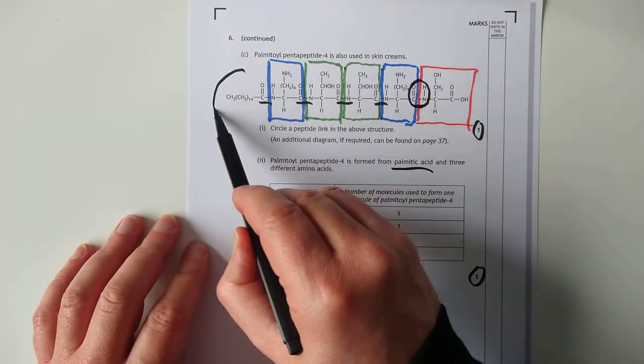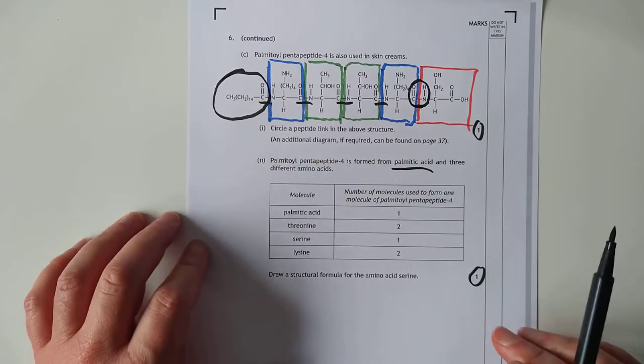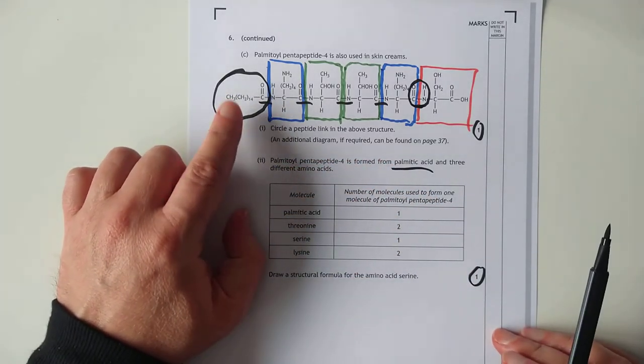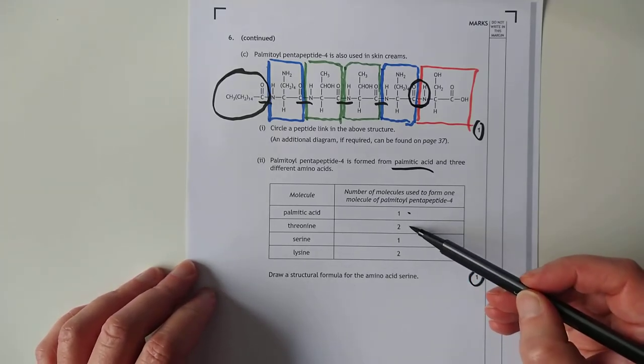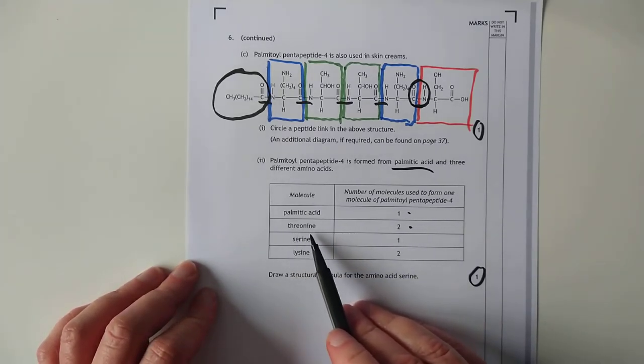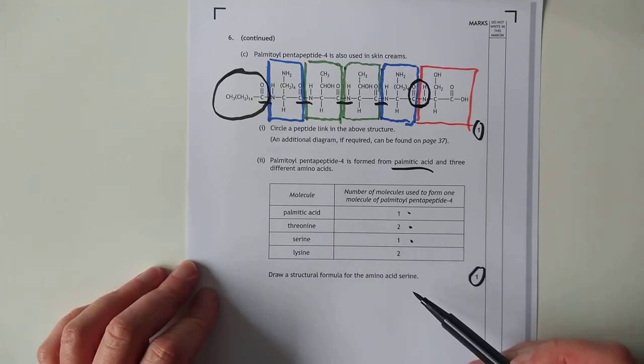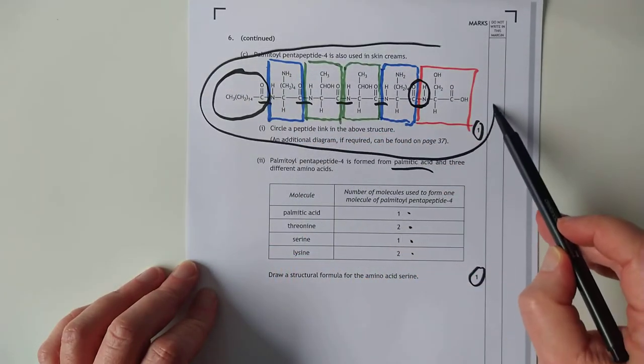So the question goes on to say this is made from palmitic acid and three different amino acids. This, by the way, will be palmitic acid. It tells you that earlier on the question. So there's one molecule palmitic acid, two molecules of whatever that amino acid is, threonine. There's one molecule of serine and there's two molecules of lysine to make up this whole shebang here.